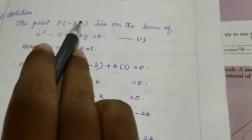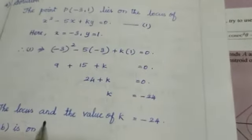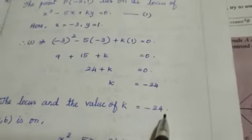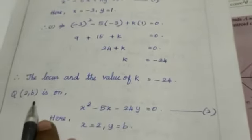When the point p is minus 3 comma 1, the value of k is minus 24. Now we are going to find the value of b.